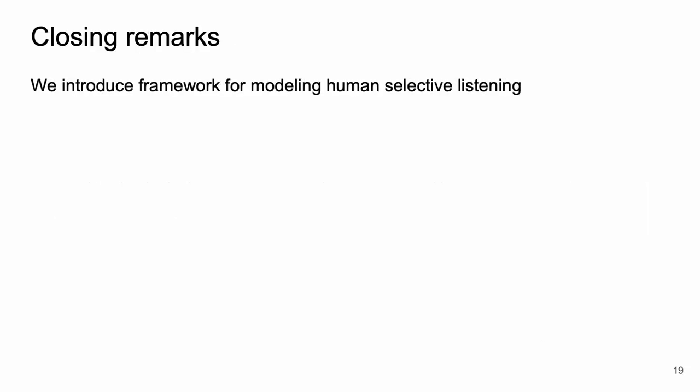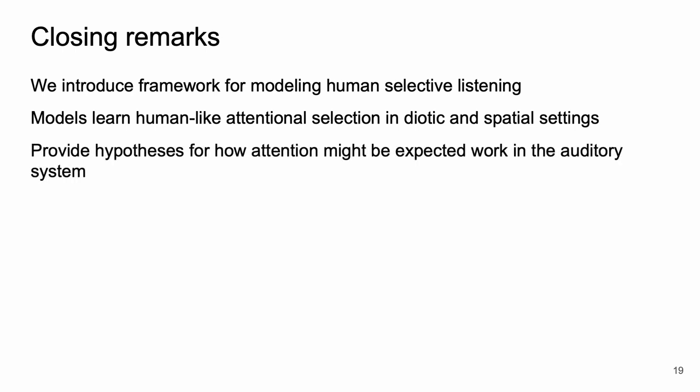In closing, we introduce a framework for modeling human selective listening. We've shown you these models can learn human-like attentional selection in both diotic and spatial settings. Taken together, these results provide a hypothesis for how attention might be expected to work in the brain given the constraints of the human auditory system and real-world task demands.